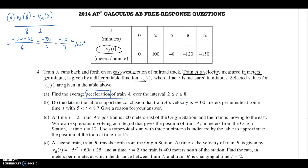Moving on to part B: do the data in the table support the conclusion that train A's velocity is negative 100 meters per minute at some point on the interval 5 to 8? Once we see that we're trying to prove a value for something, make a conclusion about a value, this has to be intermediate value theorem or mean value theorem. One works with proving a function value, another works with proving a derivative value. Since we want to prove a value for velocity, which is our given function, we want to look to the intermediate value theorem.